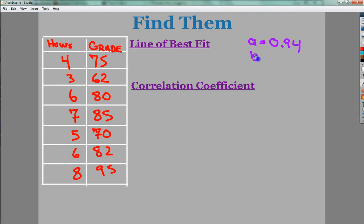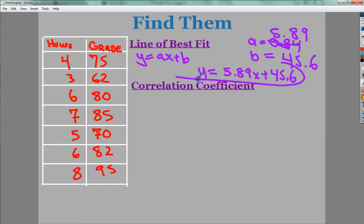But anyway, my R value that they gave me was 0.94. My B value was around, or sorry, was 5.89. My bad. And my 45.6. So my line of best fit, they gave me this form here. My line of best fit would be Y equals 5.89X plus 45.6. So there's that. And the correlation coefficient is 0.94.